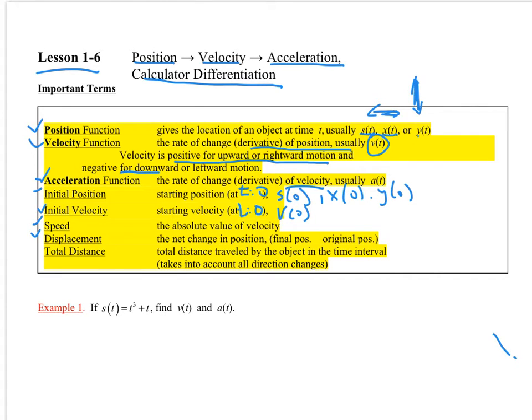Speed, we disregard which direction it is in. Displacement tells us the net change in position, and it's going to be the final position minus the original position. And then total distance, total distance takes into account that you go forwards, backwards, forwards, backwards. We find the total distance traveled.